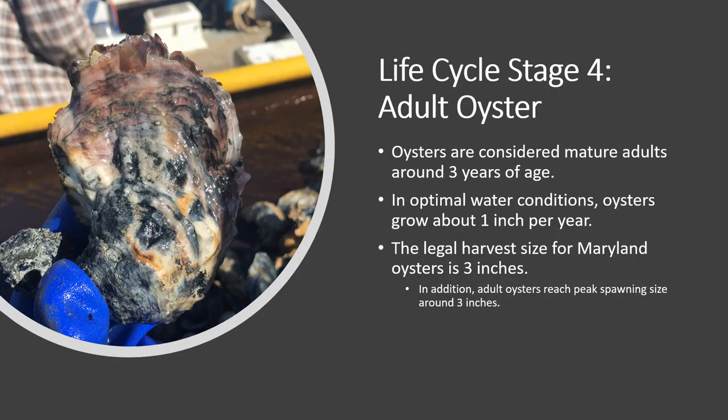Oysters spend roughly two years in their juvenile stage before maturing into adults. Mature oysters are three or more inches in length. Water quality conditions like salinity and temperature can affect oyster growth rates. However, on average, an oyster grows about one inch per year. In Maryland, the minimum size for harvesting oysters is three inches. In optimal conditions, oysters can live to be 20 years old, though this is usually seen only in controlled environments.